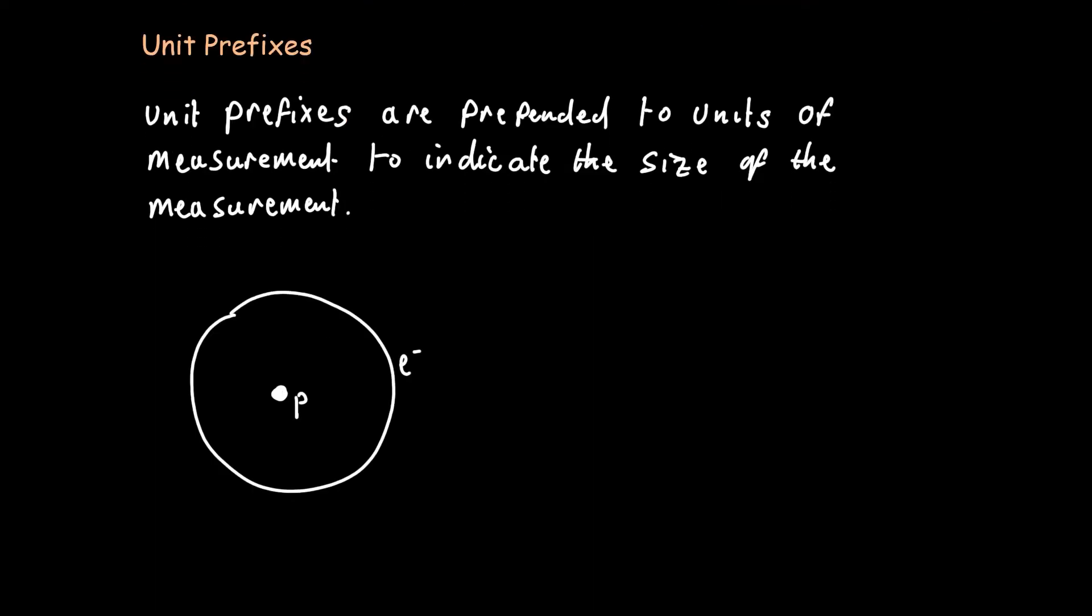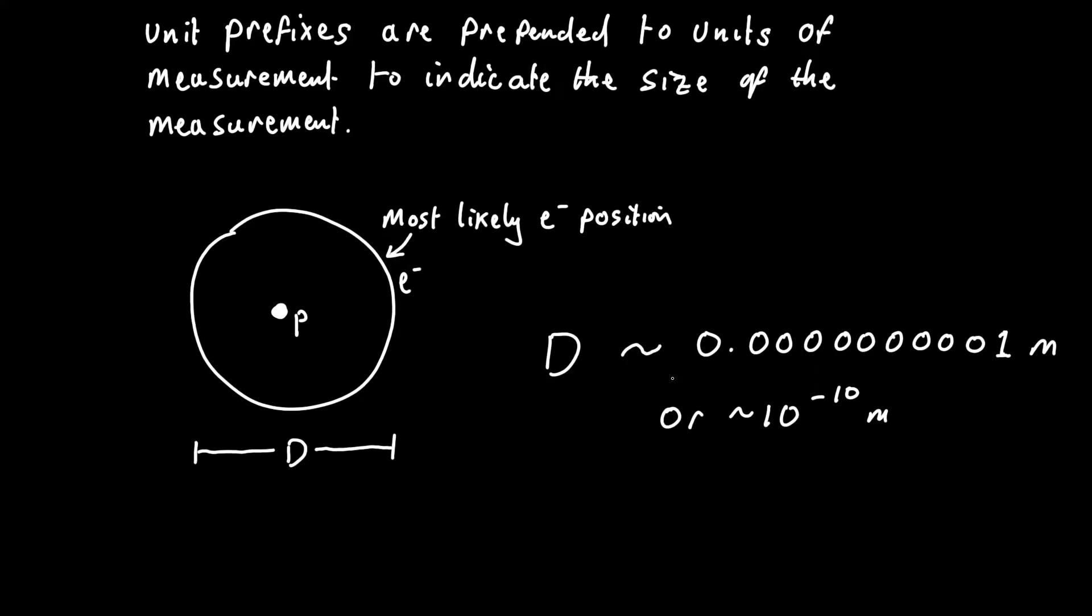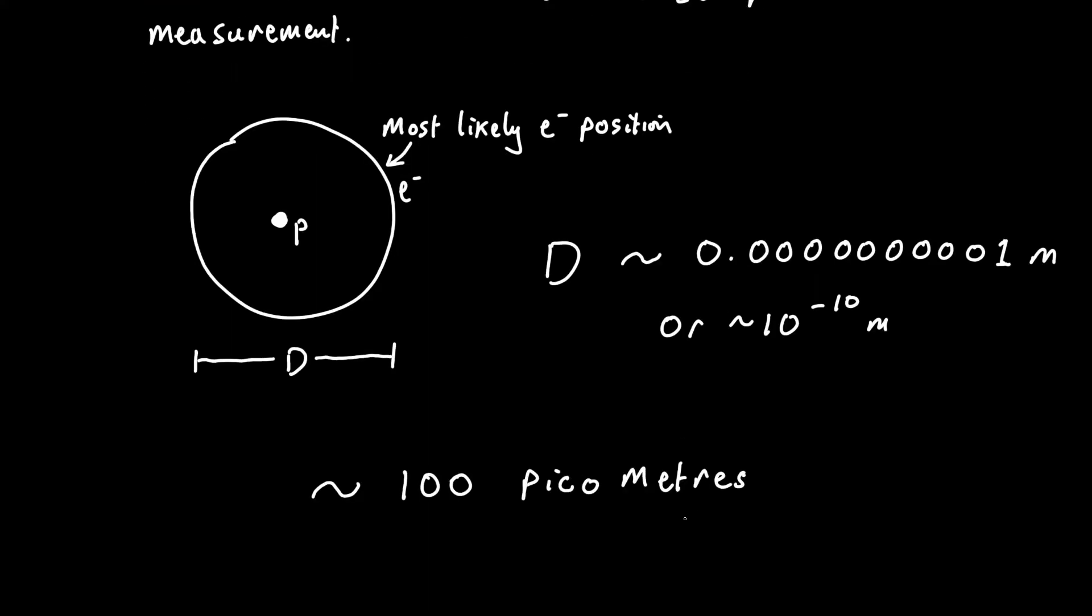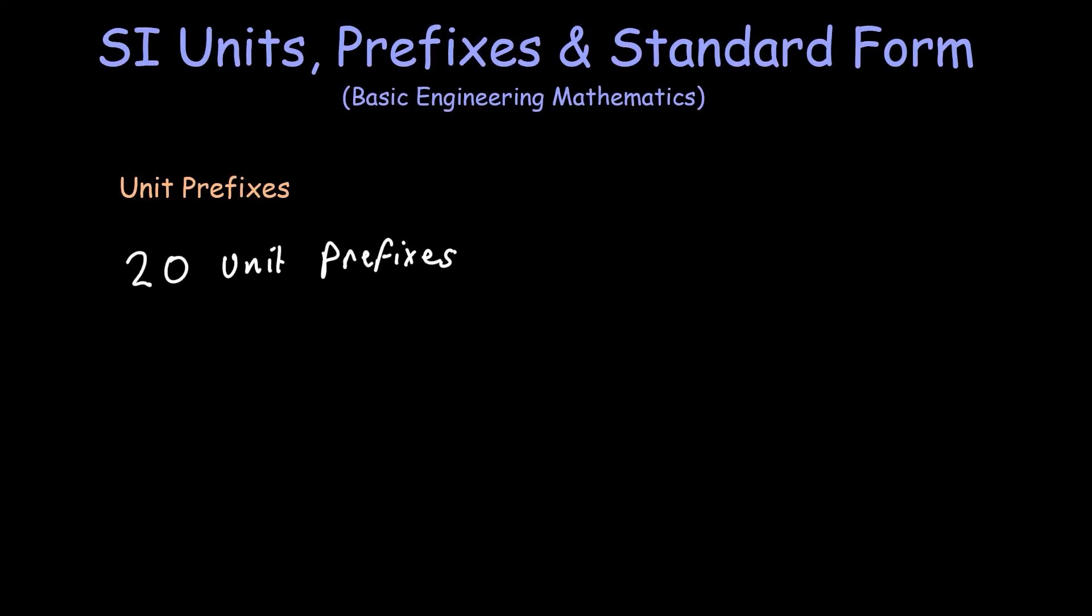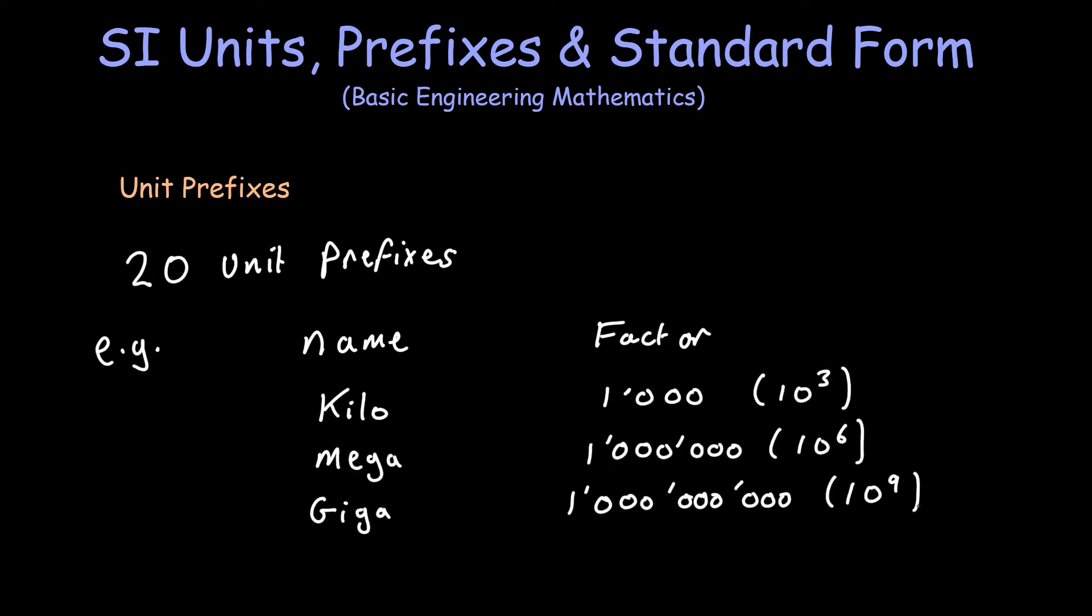Let's take the diameter of a hydrogen atom. The approximate diameter of the hydrogen atom can be expressed with this value in meters. But writing it out in this way is really inconvenient, so instead it can be written using a unit prefix like the example below. So here pico is the prefix which represents 10 to the power of minus 12. There are 20 SI prefixes used in this way. Most of them go up or down in multiples of a thousand, and here is the table of all 20 of them.